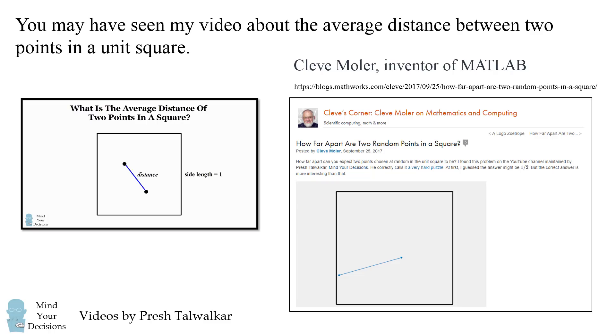How far apart can you expect two points chosen at random in the unit square to be? I found this problem on the YouTube channel maintained by Presh Talwalkar, Mind Your Decisions. He correctly calls it a very hard puzzle. At first I guess the answer might be 1 half, but the correct answer is more interesting than that.